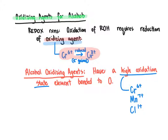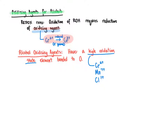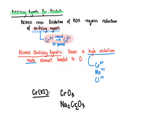We can look at specific examples of how we incorporate these high oxidation state elements bonded to oxygen into oxidizing agents. Some examples include a variety of different chromium 6+ reagents. Pretty much if you see chromium in the 6+ oxidation state, we can expect an oxidation reaction is going to occur. A couple of examples would be CrO3, which has chromium in the 6+ oxidation state, or alternatively sodium dichromate, which has the formula Na2Cr2O7. Both of these will act to enable the oxidation of alcohol molecules.